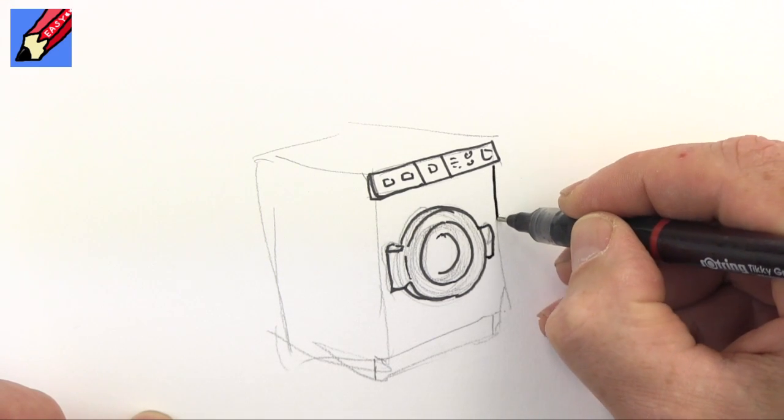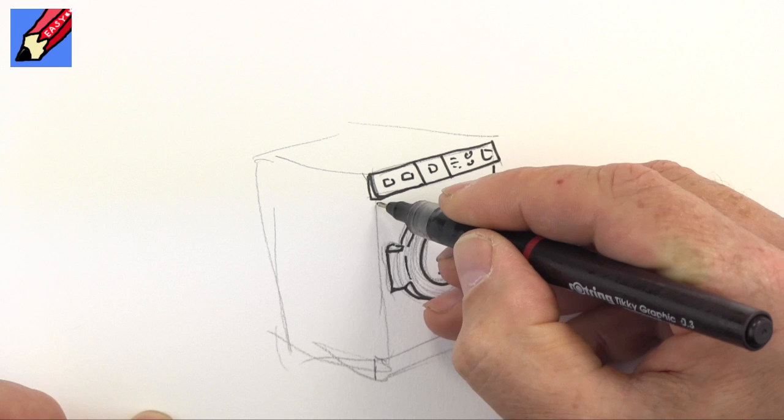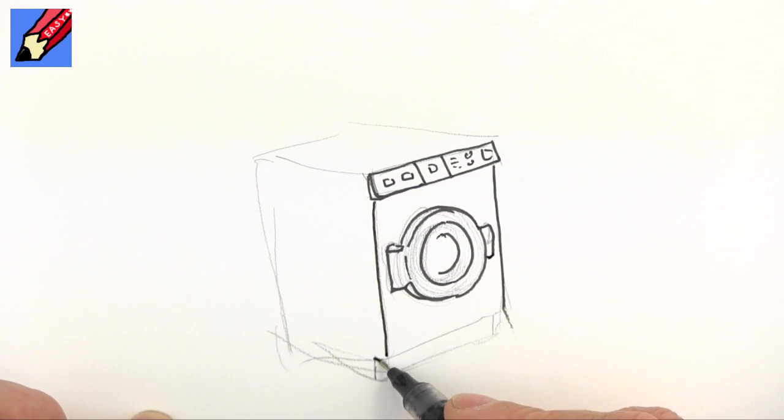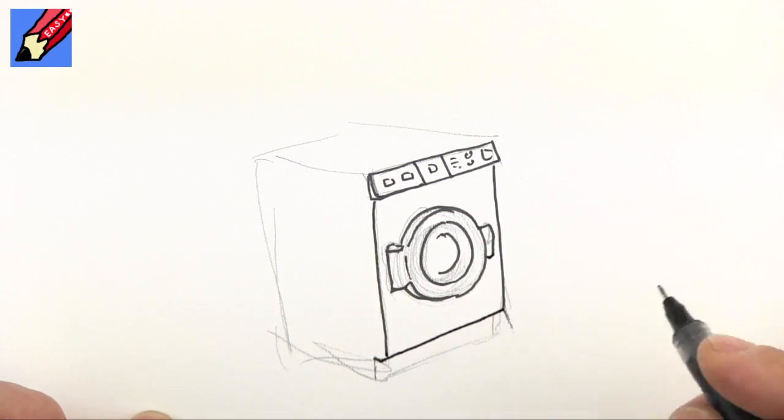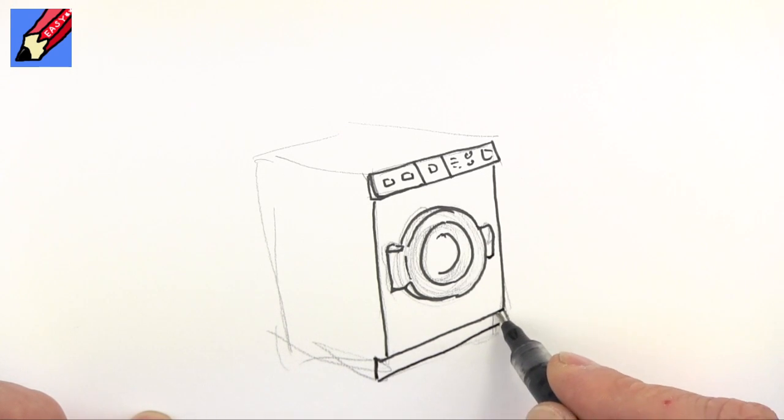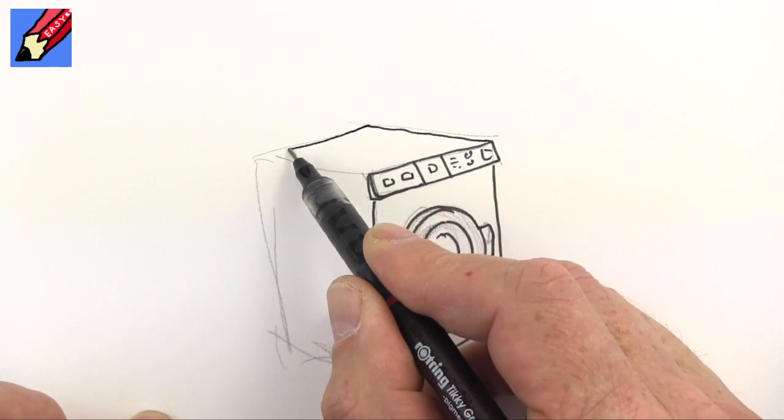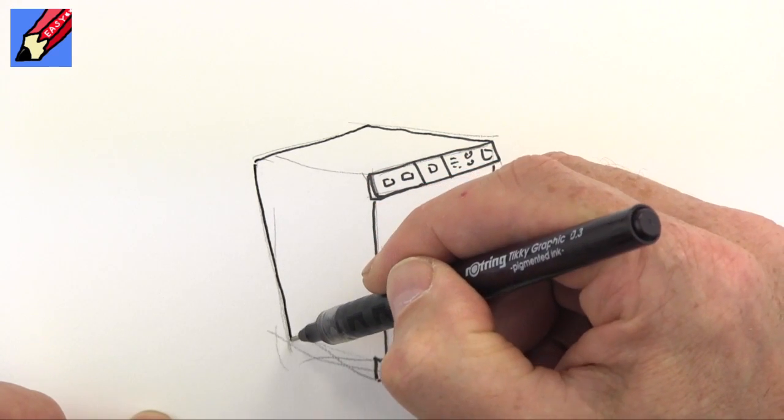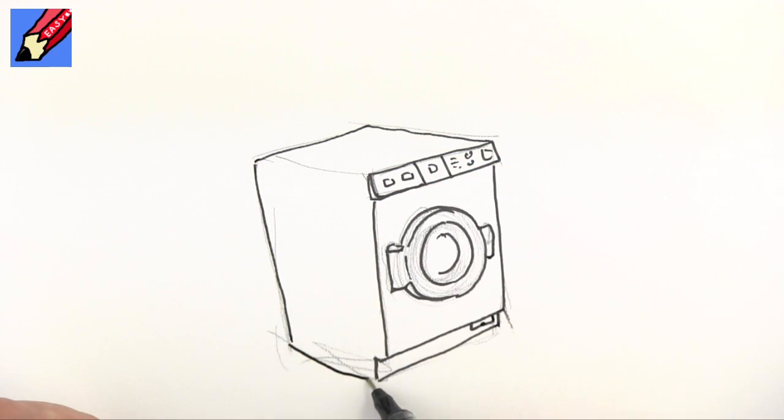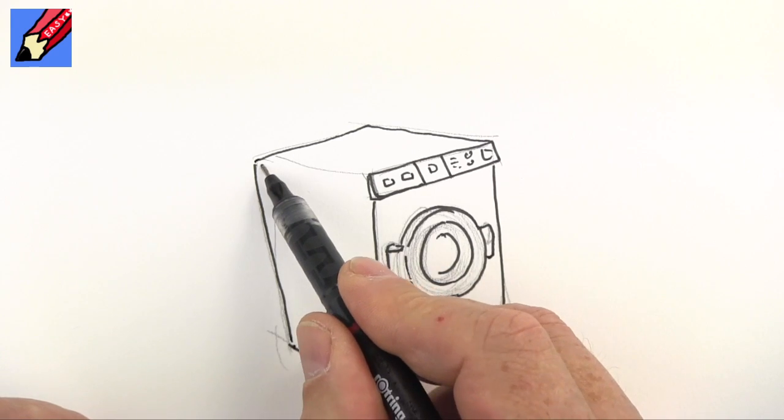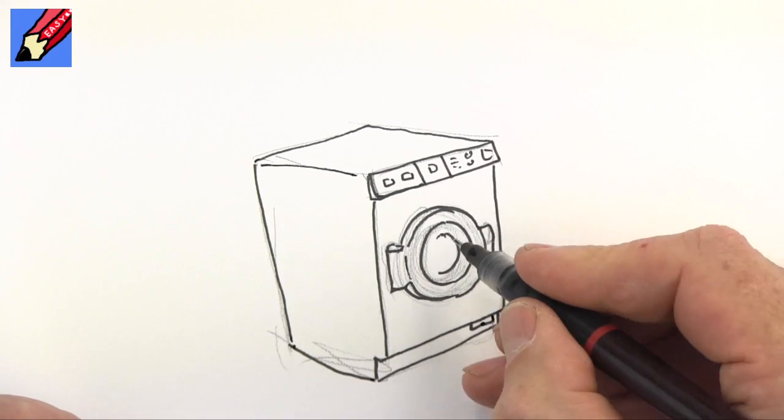This can then come down to here, that will come down to there and we'll bring that across. Oh I smudged it on the bottom. Now that will then go across to there and you usually have a little draining section there. That will go back, this will come down here, that will come there, and then you're going to have a bit along the edge like that.